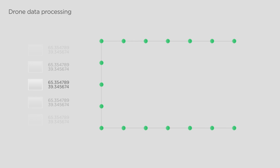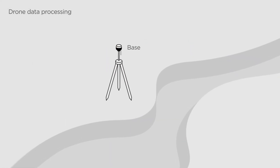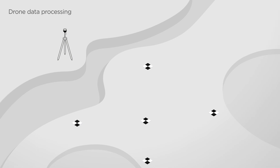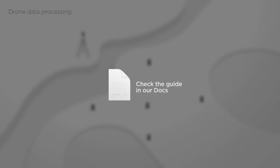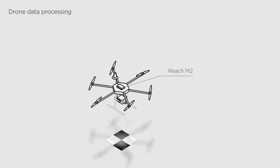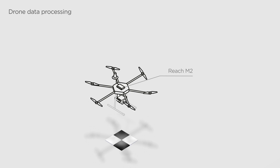Let's turn to the flight. First, you need to set up your base and place ground control points. To learn more about preparing and placing ground control points, check the guide in our docs — the link is in the description below. Then you need to install your Reach2UF on a drone, connect it to a camera using a hotshoe adapter, and configure the camera to take photos with a required time interval.